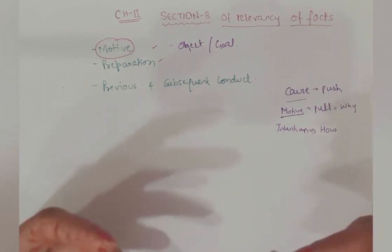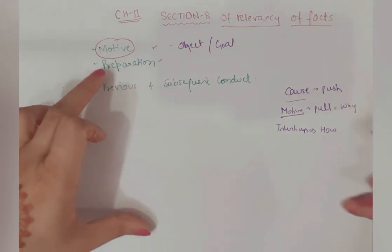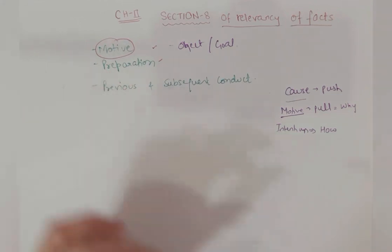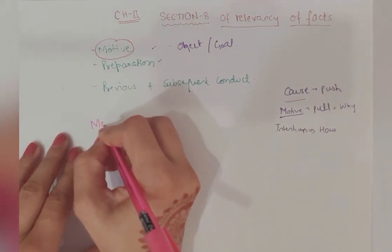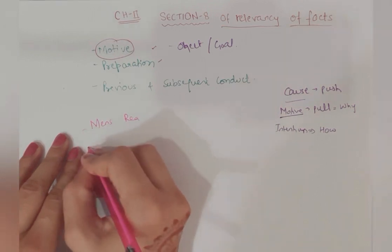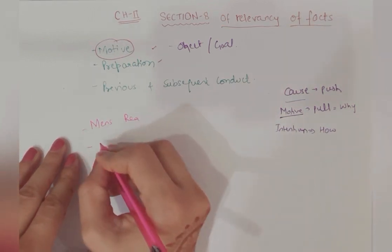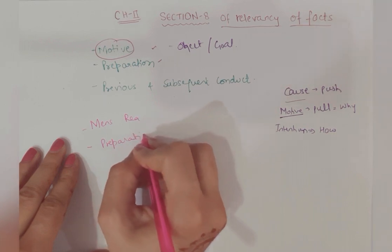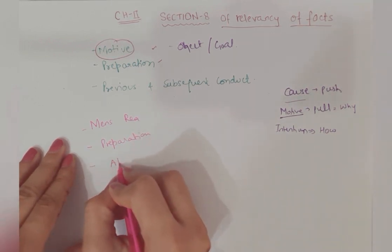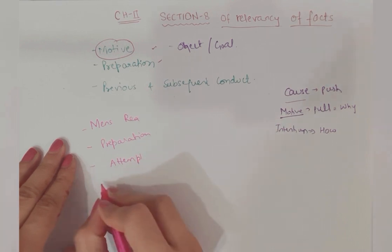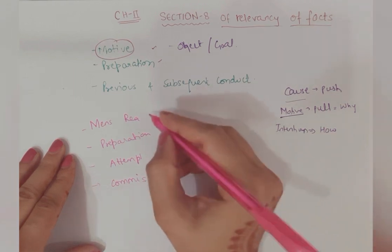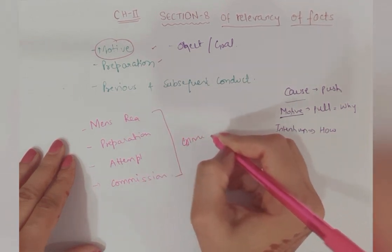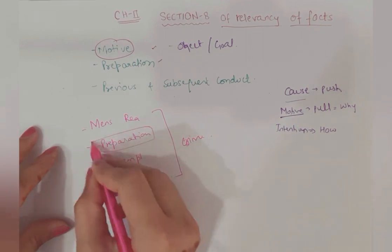Now coming to preparation. When a crime happens, there are stages. First is mens rea, then there is preparation, then there is attempt, and the fourth one is commission when the crime is actually committed. These are four stages to commit a crime. Preparation is the second stage.